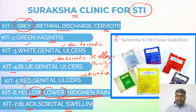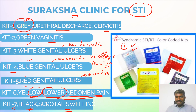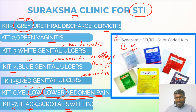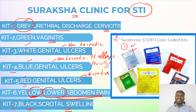Let's quickly revise: gray kit — urethral discharge and cervicitis; green kit — vaginitis; yellow kit — lower abdominal pain; black kit — scrotal swelling; red kit — genital ulcers, herpetic; and blue kit — genital ulcers, patients allergic to penicillin.